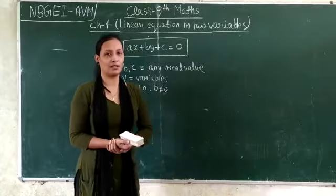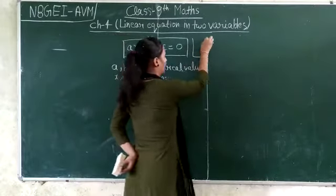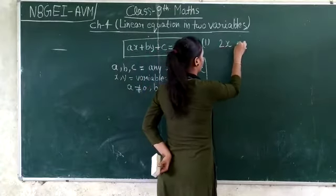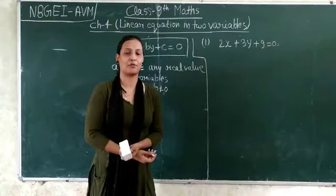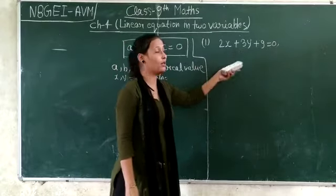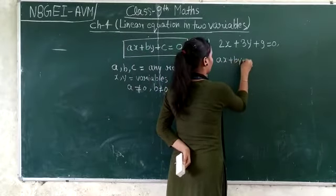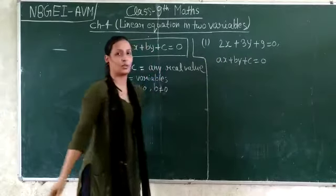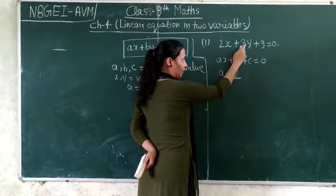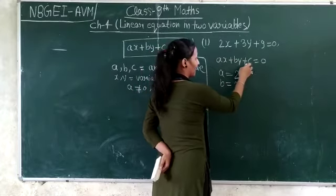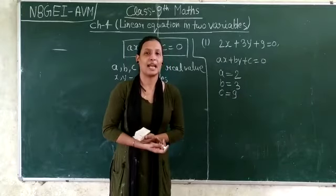I am going to explain an example related to this. Our first example: we have to find the values of A, B, and C from the equation 2x + 3y + 9 = 0. We will compare this equation with the standard form ax + by + c = 0. Comparing, in the place of A we have 2, so A = 2. In the place of B we have 3, so B = 3. And in the place of C we have 9, so C = 9. By comparing these equations we can find the values of A, B, and C.